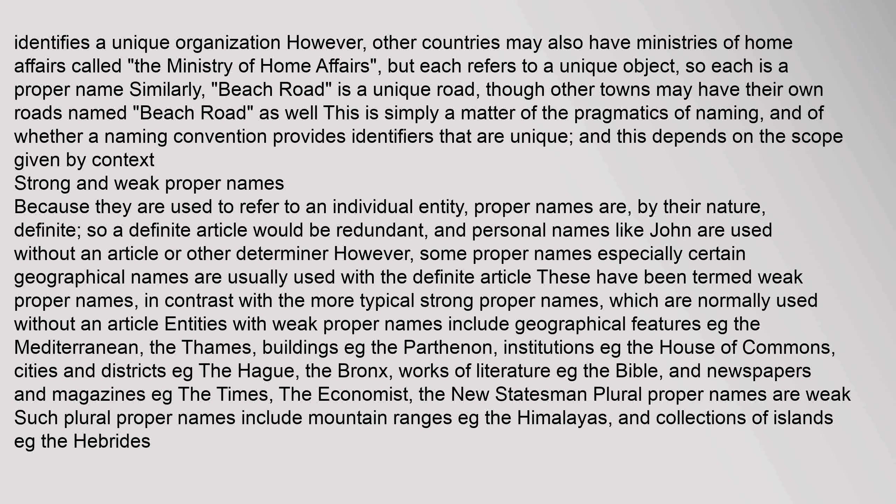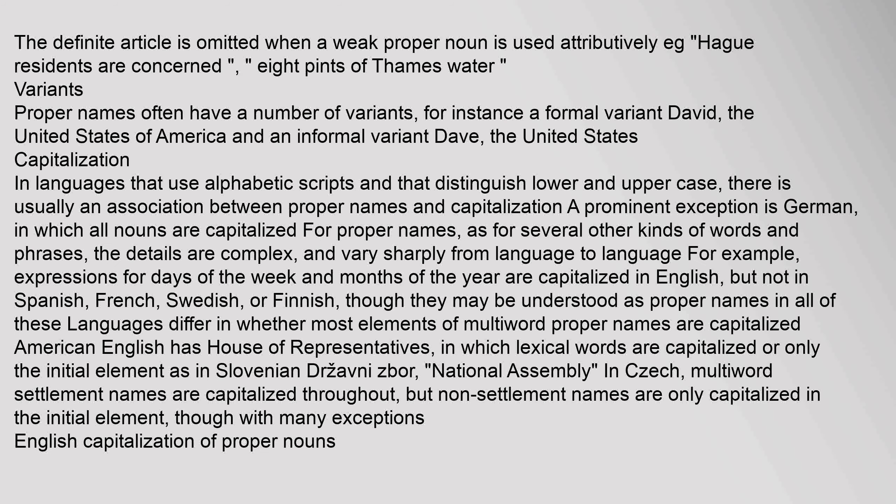Plural proper names are weak. Such plural proper names include mountain ranges, e.g. the Himalayas, and collections of islands, e.g. the Hebrides. The definite article is omitted when a weak proper noun is used attributively, e.g. Hague residents are concerned, eight pints of Thames water. Proper names often have a number of variants — for instance a formal variant, David or the United States of America, and an informal variant, Dave or the United States.